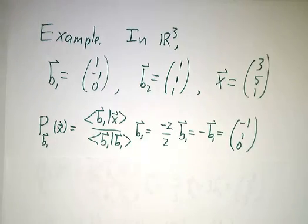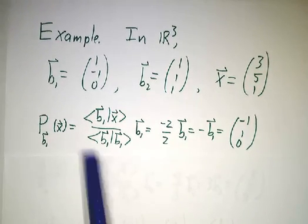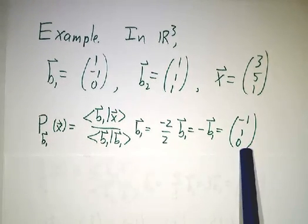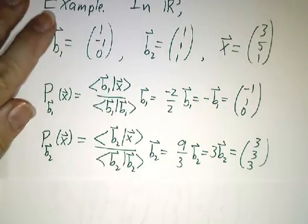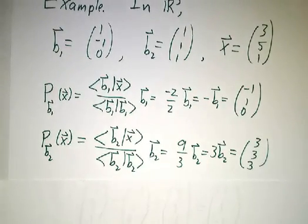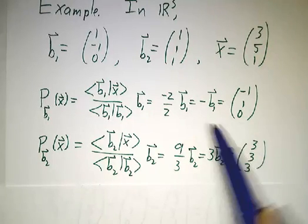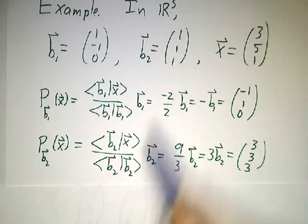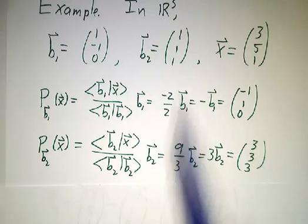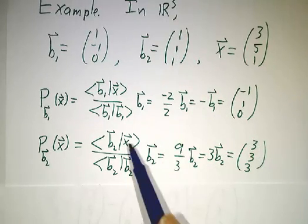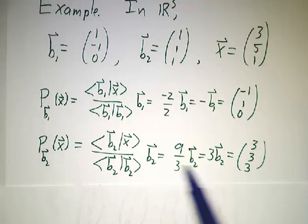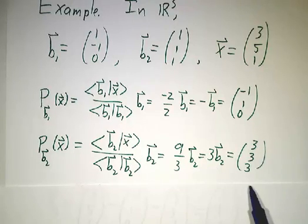So we take the projection onto b1. We already did that. That was (-1, 1, 0). We take the projection onto b2. Inner product of b2 with x is 3 plus 5 plus 1, that's 9. Inner product of b2 with itself is 1 plus 1 plus 1, that's 3. So this ratio is 9 thirds of b2, so that's 3b2, so it's (3, 3, 3).